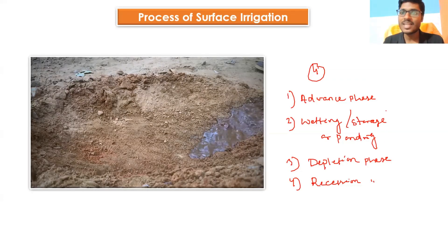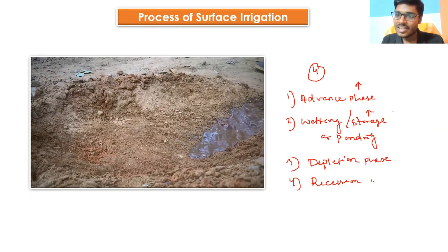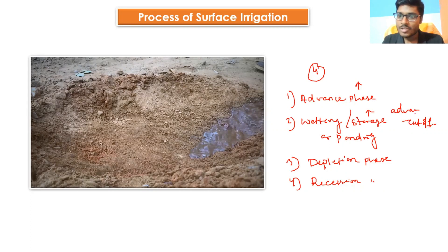The advance phase is the time period required for water to reach the end of the field or end of the furrow. The second phase is the wetting phase, storage phase, or ponding phase — it is the time period between the advance phase and the cutoff of water, meaning when the water supply is stopped.